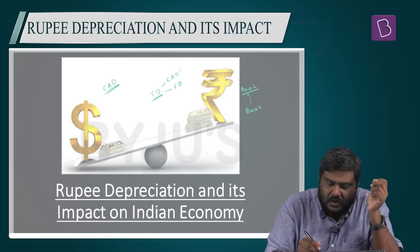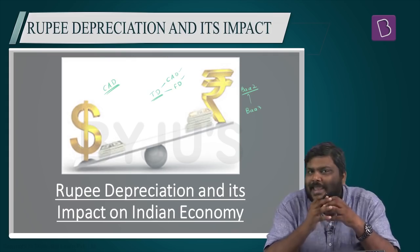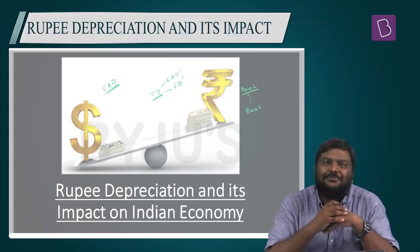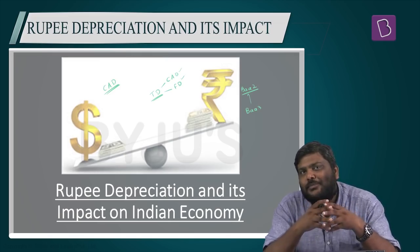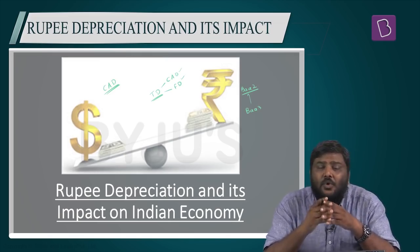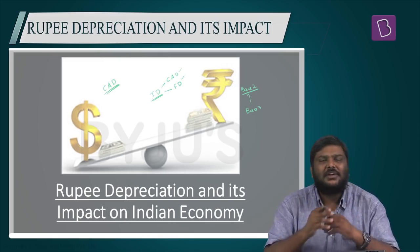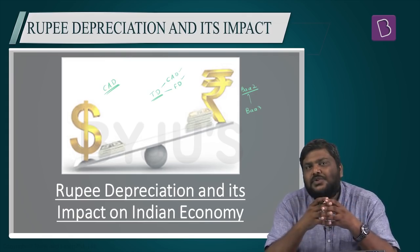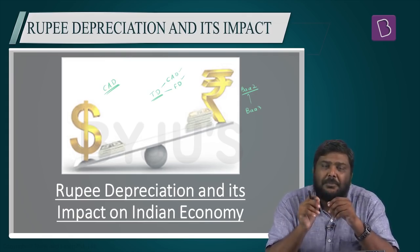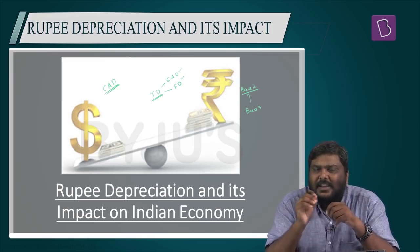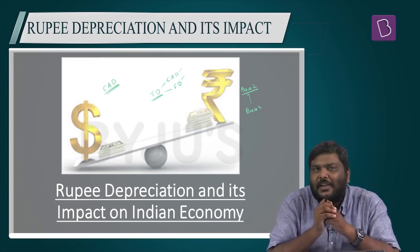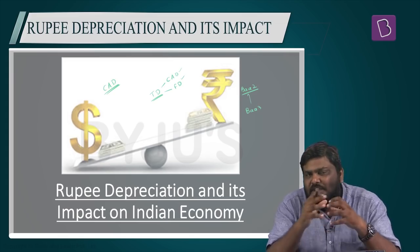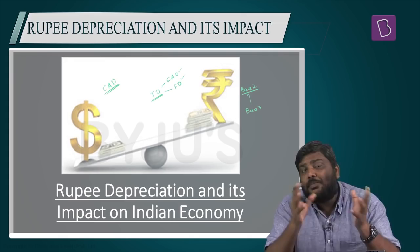Twin deficit basically refers to current account deficit as well as fiscal deficit. Any economy that suffers from one usually suffers from the other. India suffered from both in 2013, and thanks to government policies and the decline in international crude oil prices, we were able to bring both under control. But in recent times, because of depreciating rupee value, the current account deficit has increased and is now threatening the fiscal deficit, which may cross the 3.3% threshold set by the government in the budget for FY19.